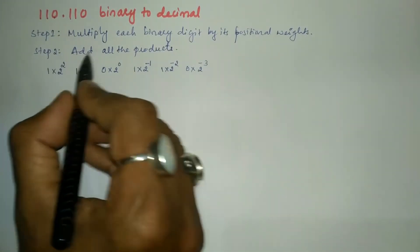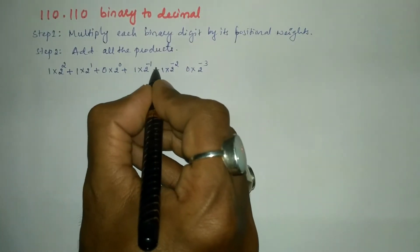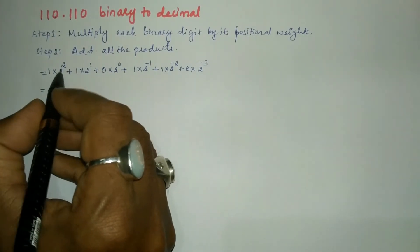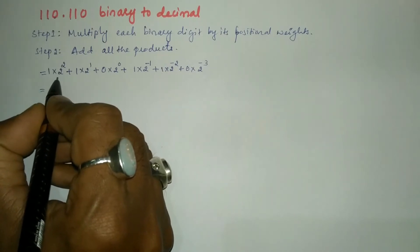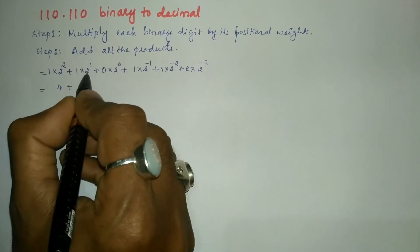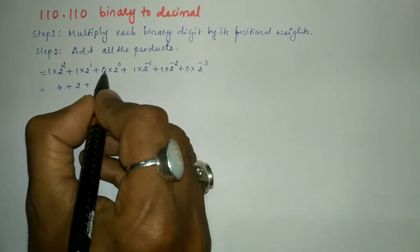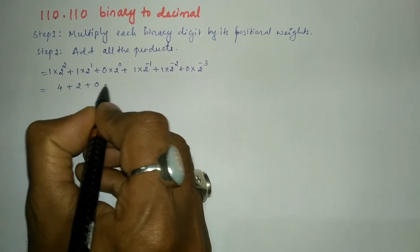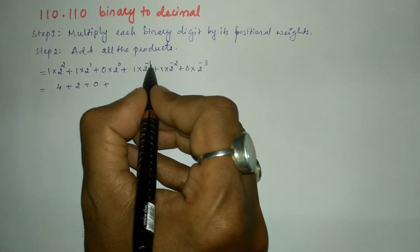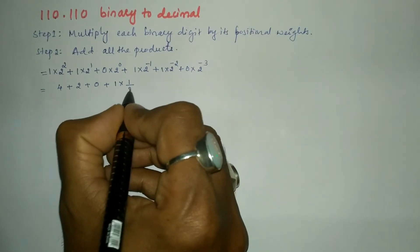Step two says: add all the products. So I am going to add all of these products, putting a plus sign in between. Further, we simplify: 2 to the power 2 is 4, so 1 times 4 is 4; plus 2 to the power 1 is 2, so 1 times 2 is 2; plus 0 into anything becomes 0. Now, 1 into 2 to the power minus 1 can be written as 1 into 1 divided by 2.